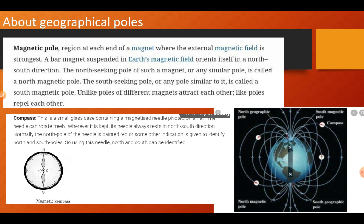A compass is a small glass case containing a magnetized needle pivoted on a nail. The needle can rotate freely wherever it is kept, and its needle always rests in the north-south direction. Normally the north pole of the needle is painted red, or some other indication is given to identify the north and south poles. This is how a compass works.